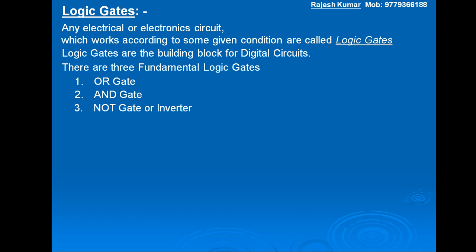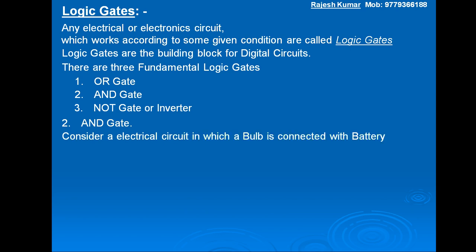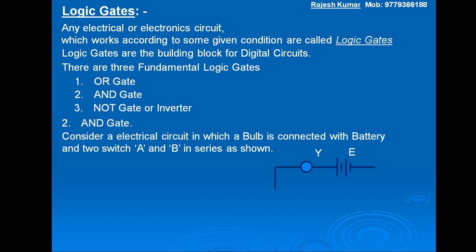Now we will discuss the AND gate. Consider an electrical circuit in which a bulb is connected with a battery and two switches A and B in series, as shown. This is an electric bulb, or output Y, connected with a battery of EMF E. Switch A and switch B are connected in series and the circuit is completed.